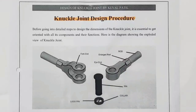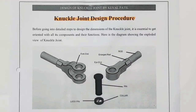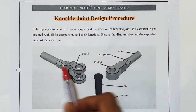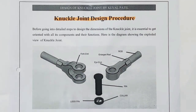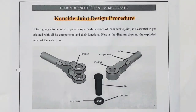Where do we use the knuckle joint? It is used to connect two rods whose axes either coincide, intercept, or lie in one plane.